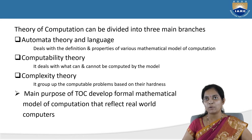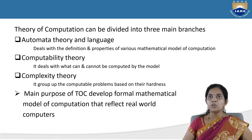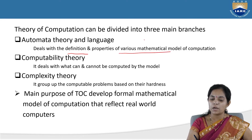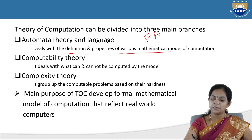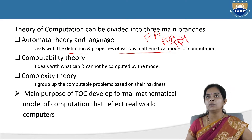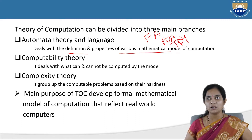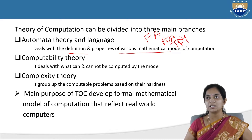Automata theory and language deals with the definition and properties of various mathematical models of computation. The mathematical models are finite automata, pushdown automata, and Turing machines. Under finite automata, we have deterministic finite automata, non-deterministic finite automata, and epsilon finite automata — there are many models within finite automata.